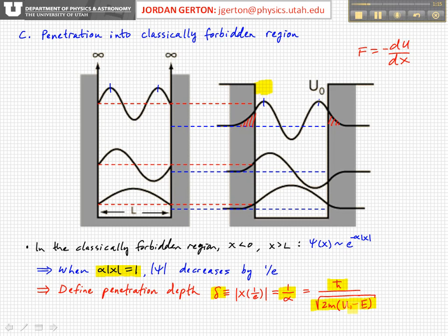then to the top of the well, then we get that this numerator is approaching 0, this denominator is approaching 0, which means that the penetration length delta is approaching infinity.